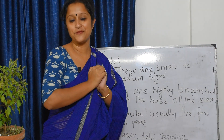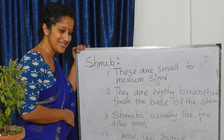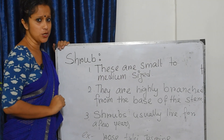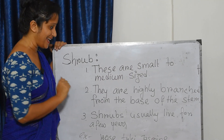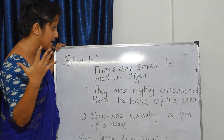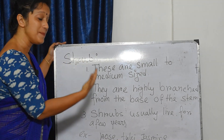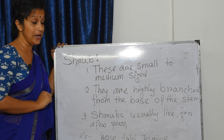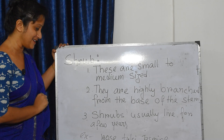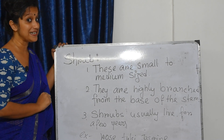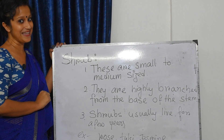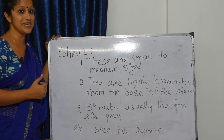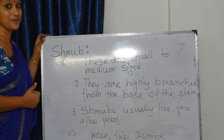The next type of plant is shrub. What is shrub? These are small to medium sized. They are highly branched from the base of the stem. Shrubs usually live for a few years. The examples of shrubs are rose, tulsi, and jasmine.